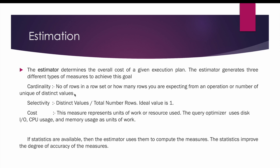For example, in an employees table there are 100 rows, which means there are 100 unique employee IDs since employee ID is the primary key. So the cardinality of employee ID is 1, because the number of distinct values is 100 and the total number of rows is also 100. The lower the cardinality, the better the cost, so employee ID is the best column to use in the where clause of the select statement.